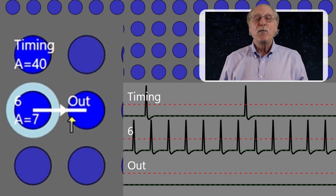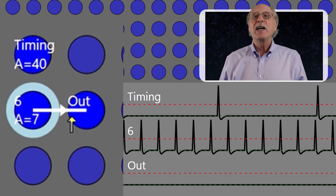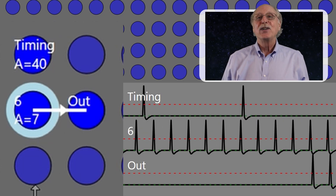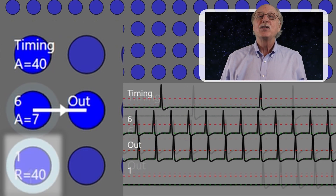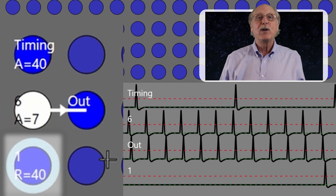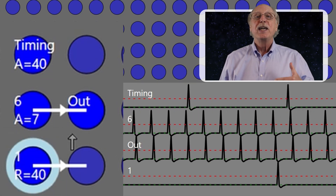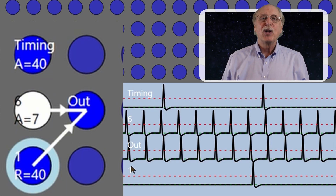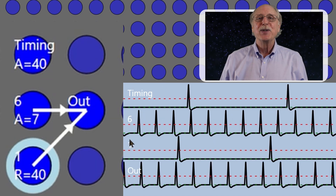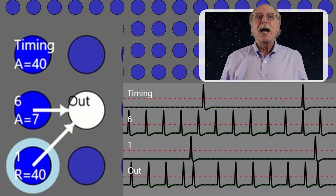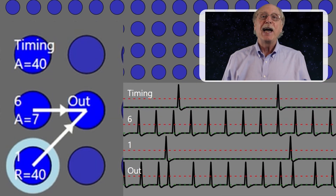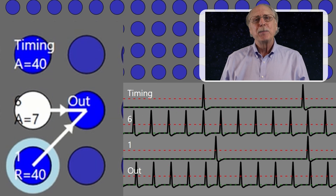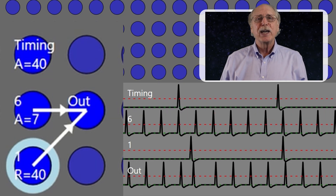So OUT will fire shortly after 6 fires. Now let's assign another neuron labeled '1', and set it to a value of 1 so it will spike once in every time period. We'll add a small degree of randomness. For the summation to be accurate, we'd like OUT to spike 7 times in the time period. But it doesn't work out that way.